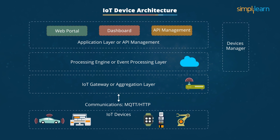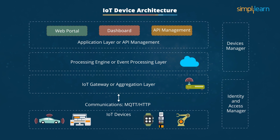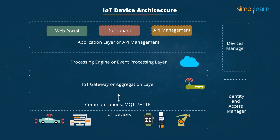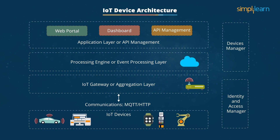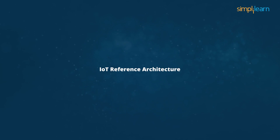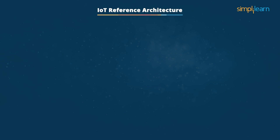The last layer is called the application layer or API management layer. It acts as an interface between third-party applications and infrastructure. The entire landscape is supported by device managers and identity and access managers, which are useful for security of the architecture.